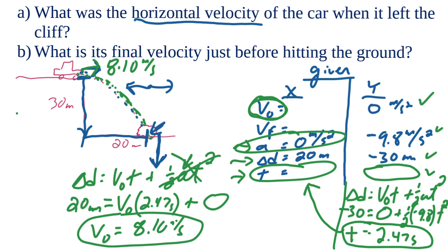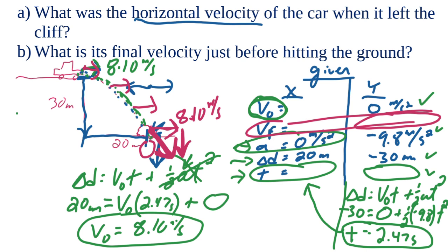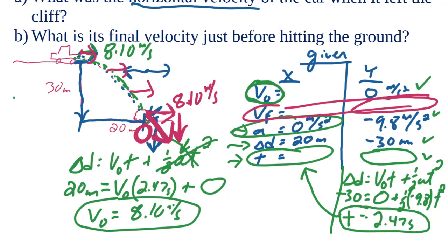The second part of the question asks how fast we're moving right when we hit the ground. Right before impact, the car has both a horizontal speed and a vertical speed. The horizontal speed we already know — since nothing speeds it up or slows it down horizontally, it remains 8.10 m/s the whole time. We still need to calculate the vertical velocity.